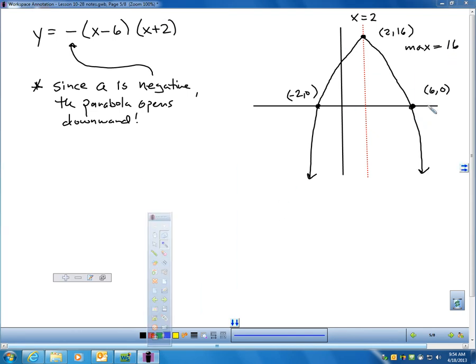Since A is negative, it should open down. By the way, this has a maximum of 16. I just sketched a graph in intercept form.